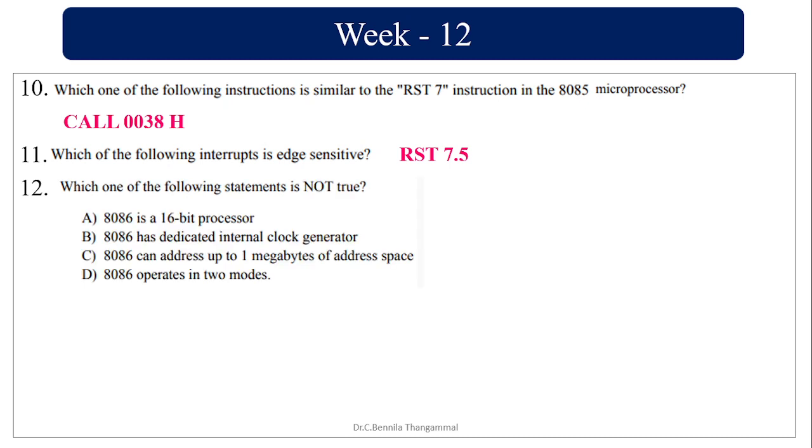Which one of the following is not true? 8086 is a 16-bit microprocessor, true. It has 1 megabyte of address space because the address length is 20. 2 power 20 is 1 megabyte. It works in two modes - minimum mode and maximum mode.